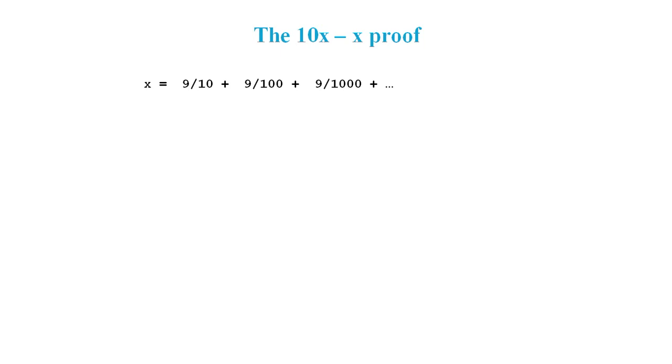So now let's do the 10x-x proof with the rational values. Here we start with x equals a series, 9 tenths plus 9 hundredths plus 9 thousandths and so on.